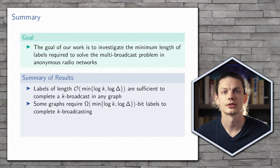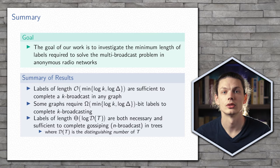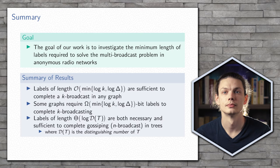Secondly, we show that there are some graphs which require this length of labels. Finally, in trees, we show that using a distinguishing labeling is both necessary and sufficient to complete the gossiping problem in a tree.